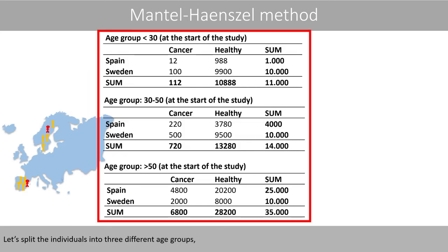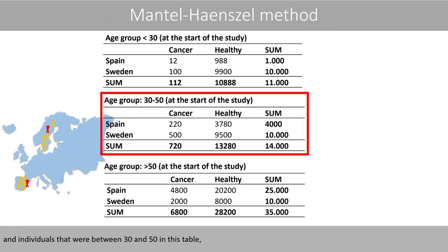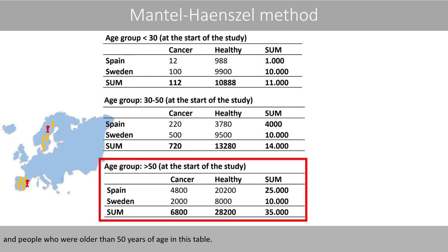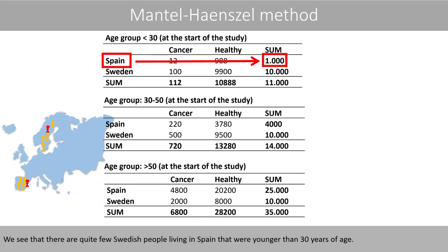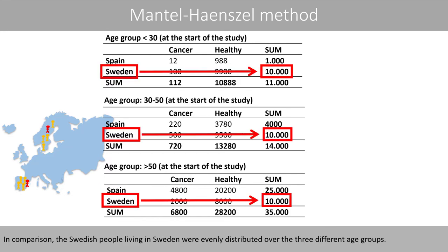Let's split the individuals into three different age groups: individuals younger than 30 years of age at the start of the study in one table, individuals between 30 and 50 in another table, and people older than 50 years of age in a third table. We see that there are quite few Swedish people living in Spain who were younger than 30, and most Swedish people living in Spain were older than 50. In comparison, the Swedish people living in Sweden were evenly distributed over the three age groups.